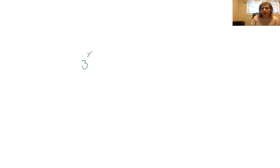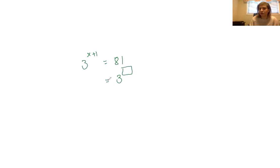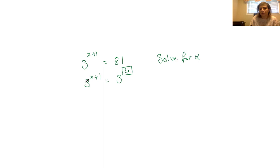Sometimes we're going to have more complicated ones where you're going to have to do more work. Let's say I have 3 to the power of x plus 1 equals to 81. You need to do exactly the same thing — make sure your bases are the same. 3 to the power of 3 is 27, so let's try 3 to the power of 4, which is 81. Now I have 3 to the power of x plus 1 equal to 3 to the power of 4. The whole idea is to solve for x, so I'm going to drop the base and make my exponents equal to each other.